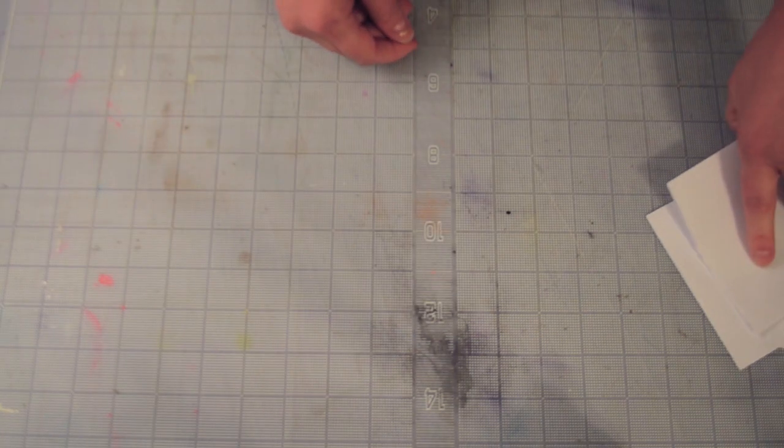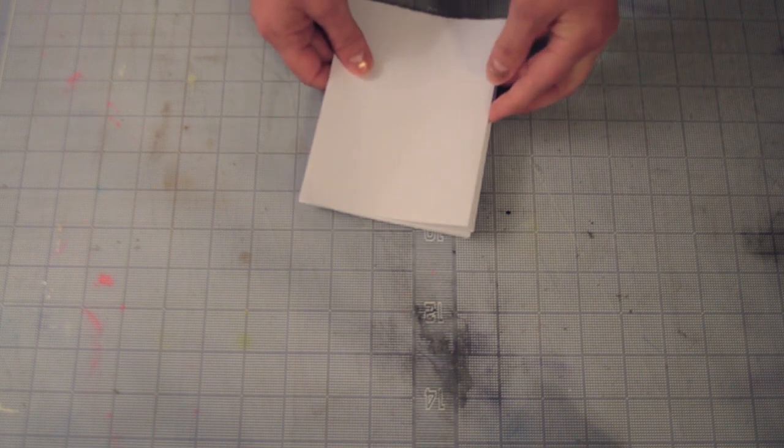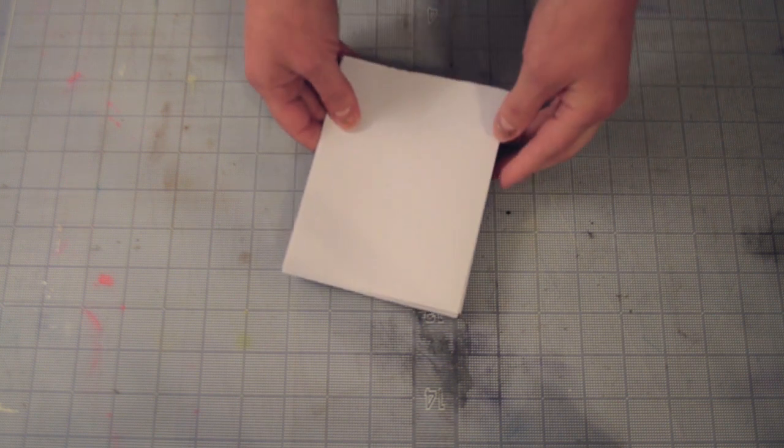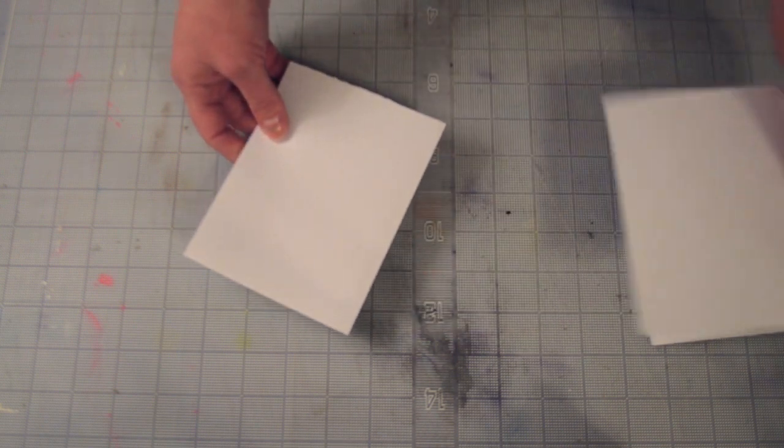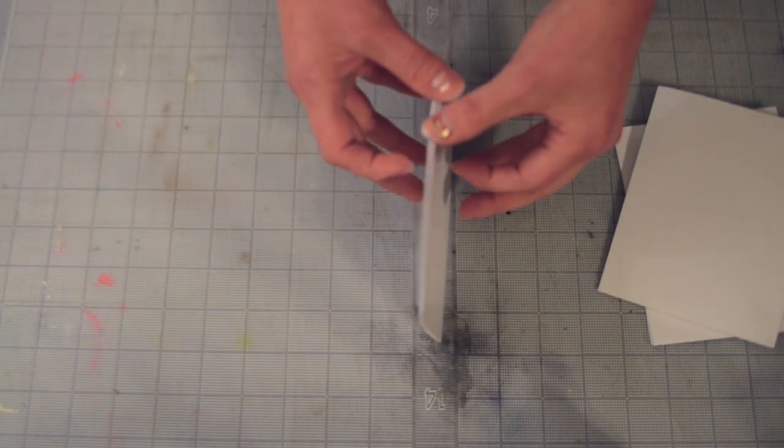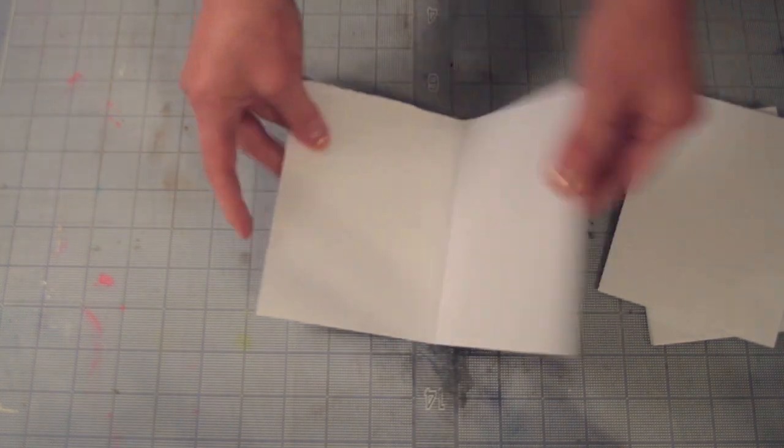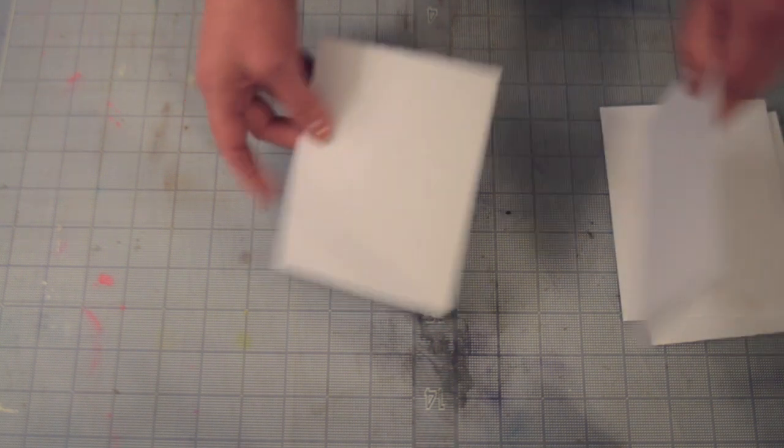And for my book, I have eight images. So I'm going to start with four pieces. And when you have a folded sheet, it's called a folio. So I'm going to take four folios and I'm going to nest them together.